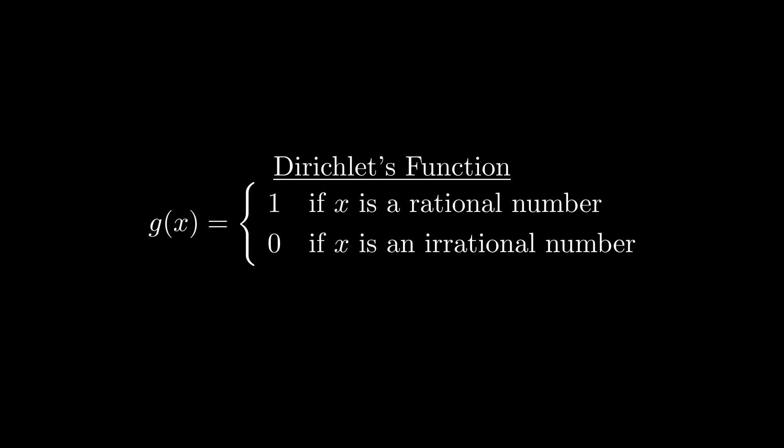In a course I recently took at my university, we were introduced to Dirichlet's function. This function has a valid, yet odd setup. If an input to the function is a rational number like 4, negative 2 thirds, or 5 sixths, the output is 1. If an input to the function is an irrational number like the square root of 2 or pi, the output is 0.